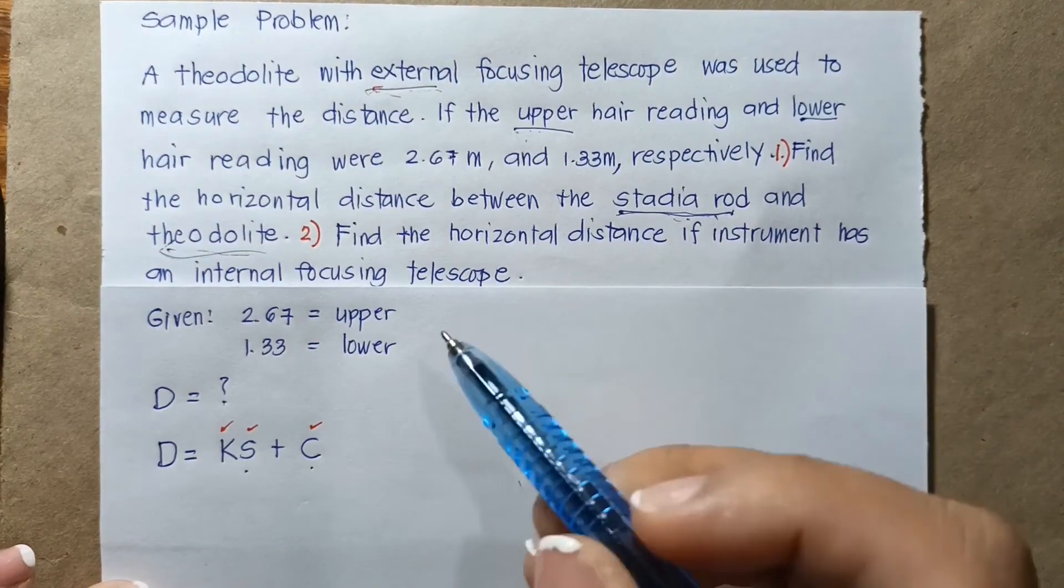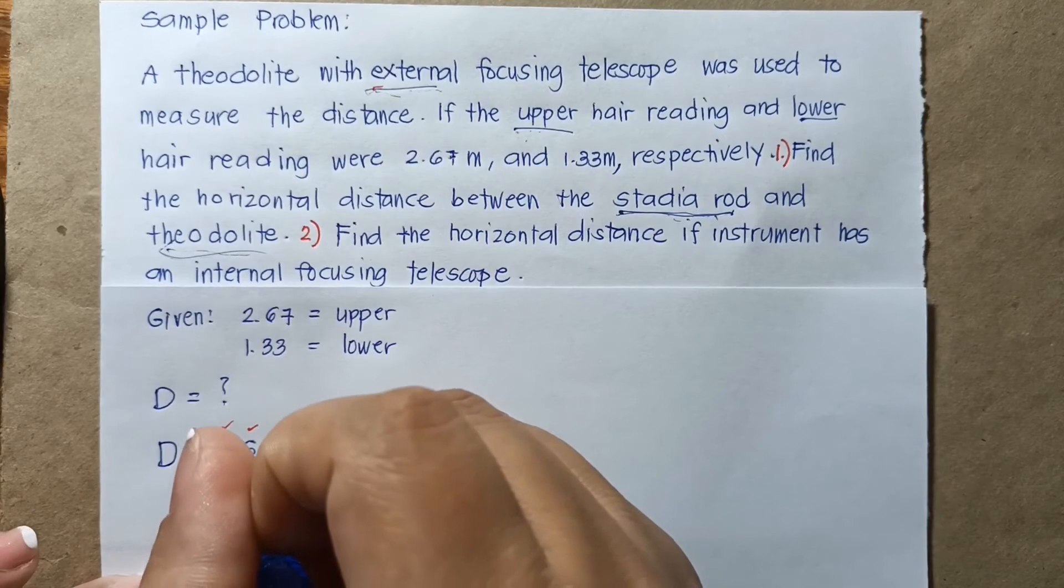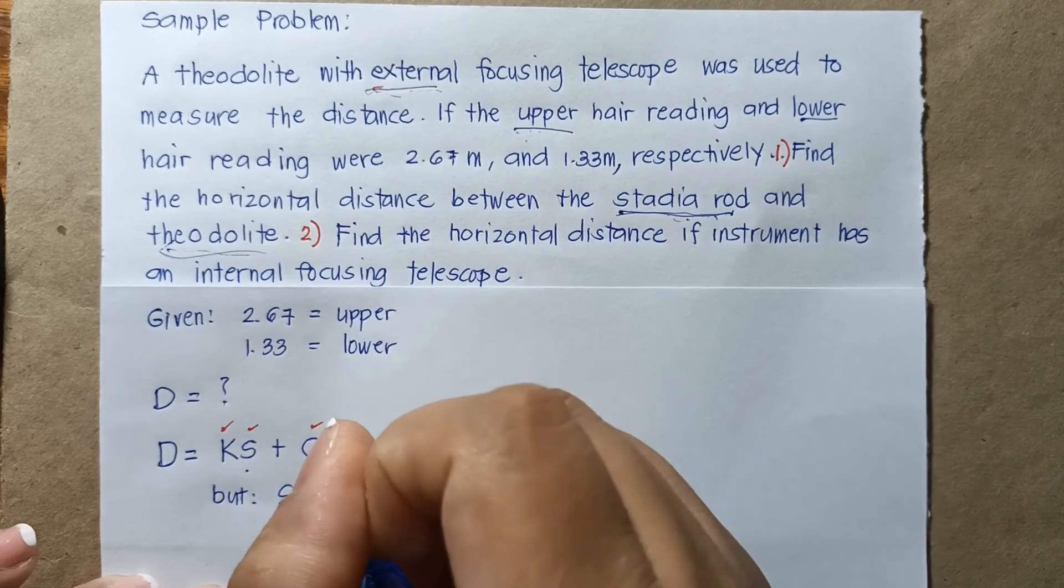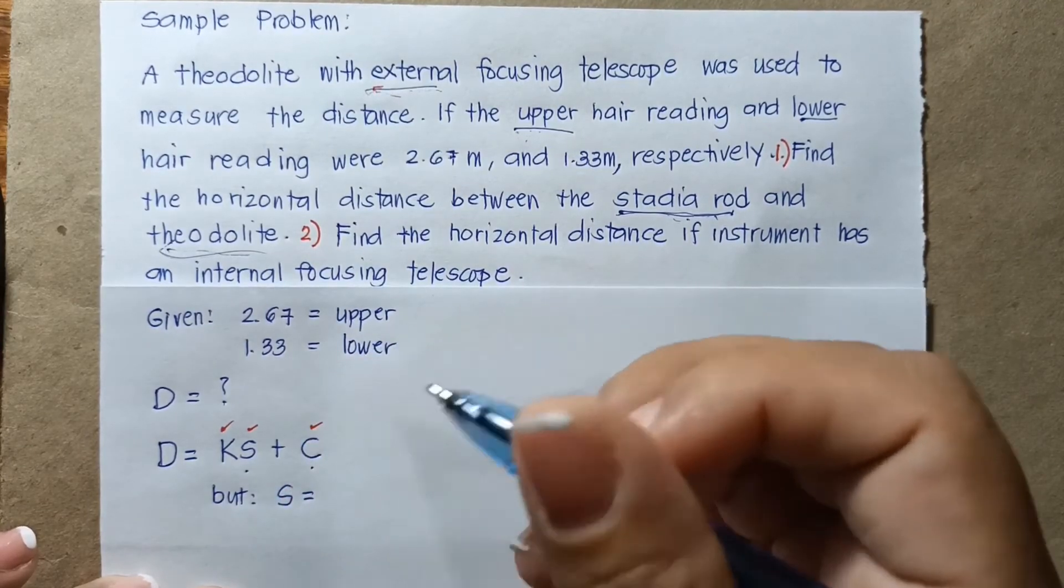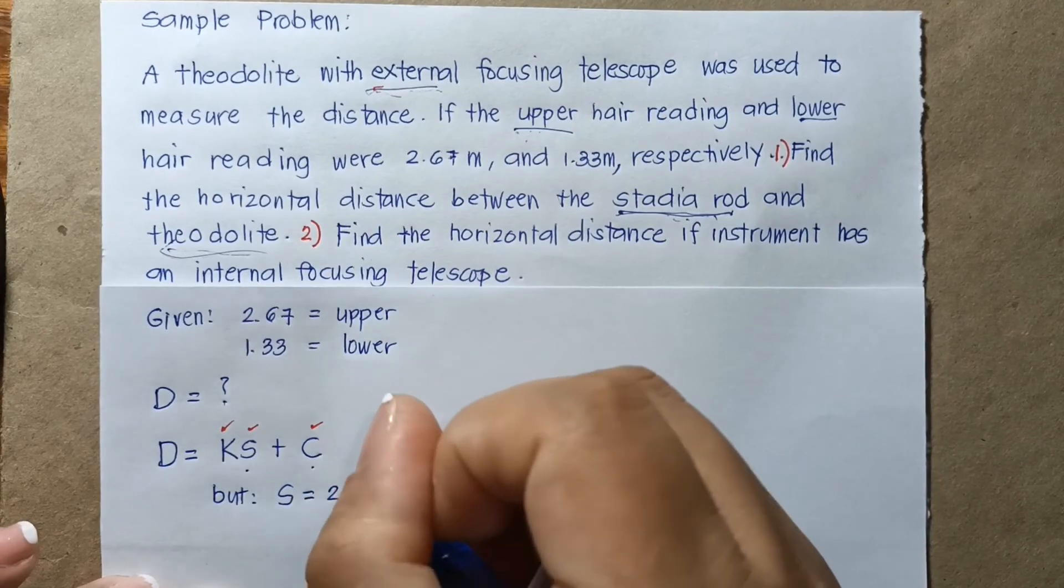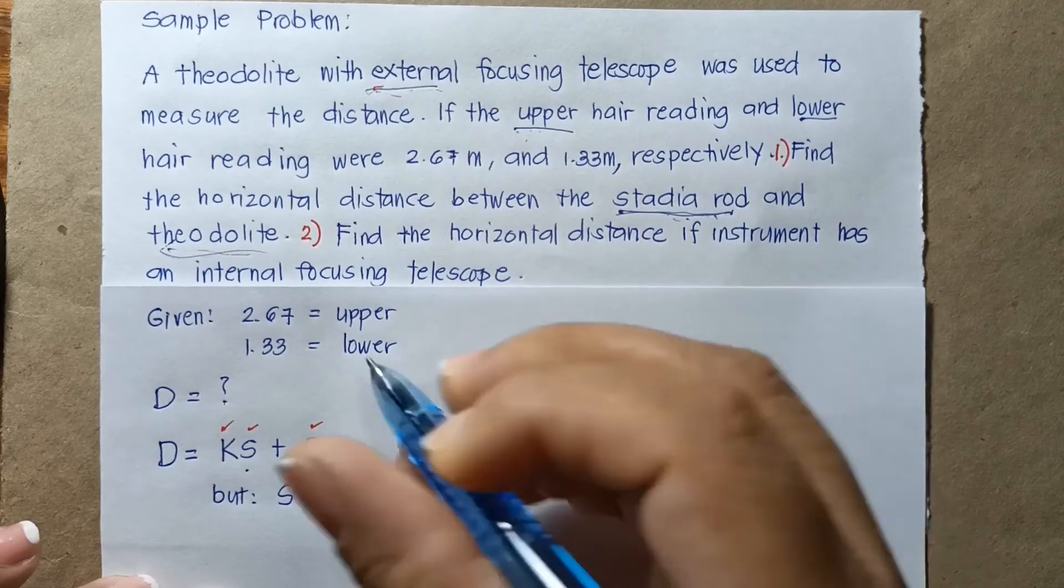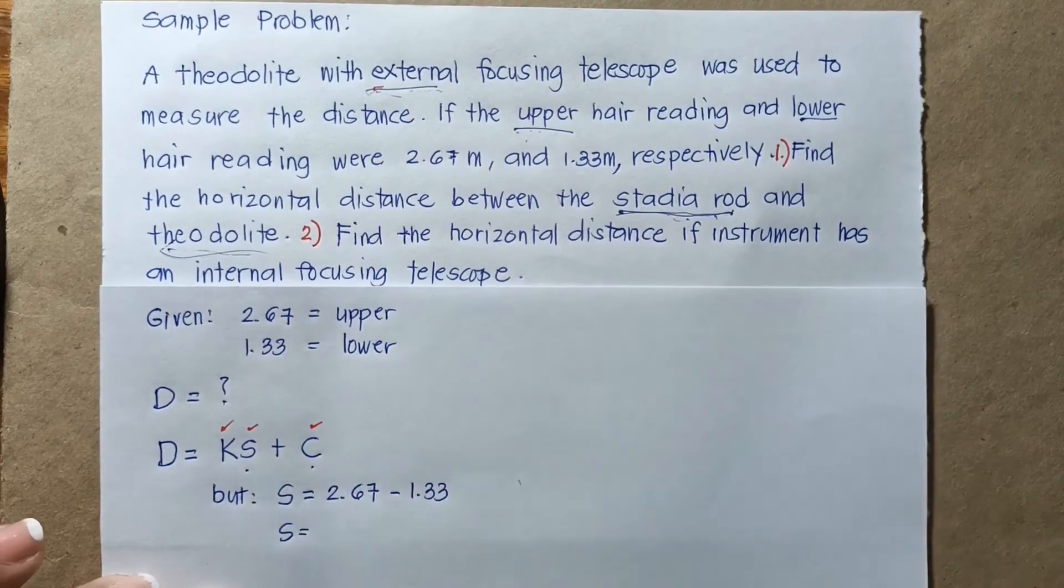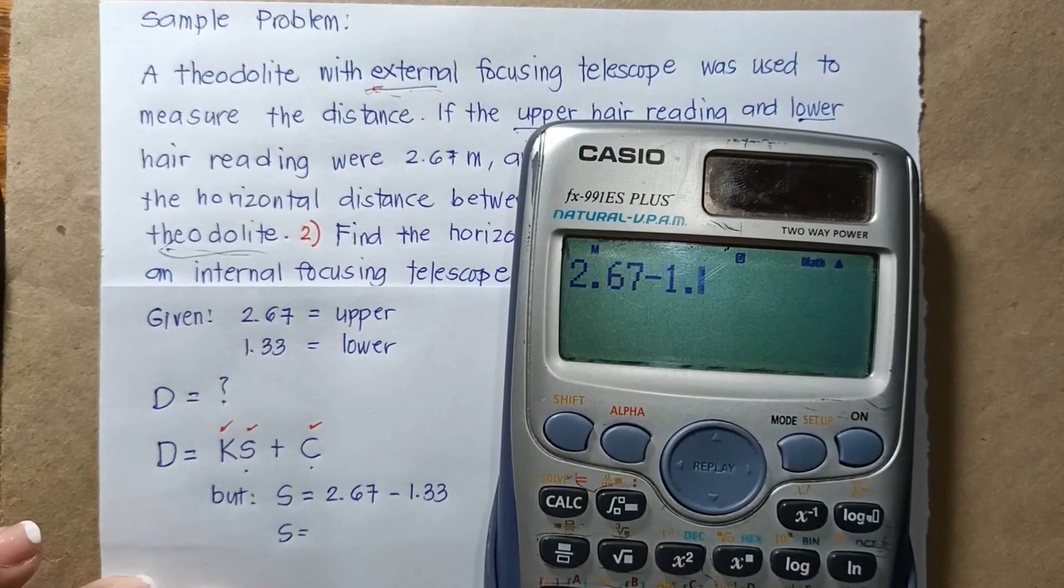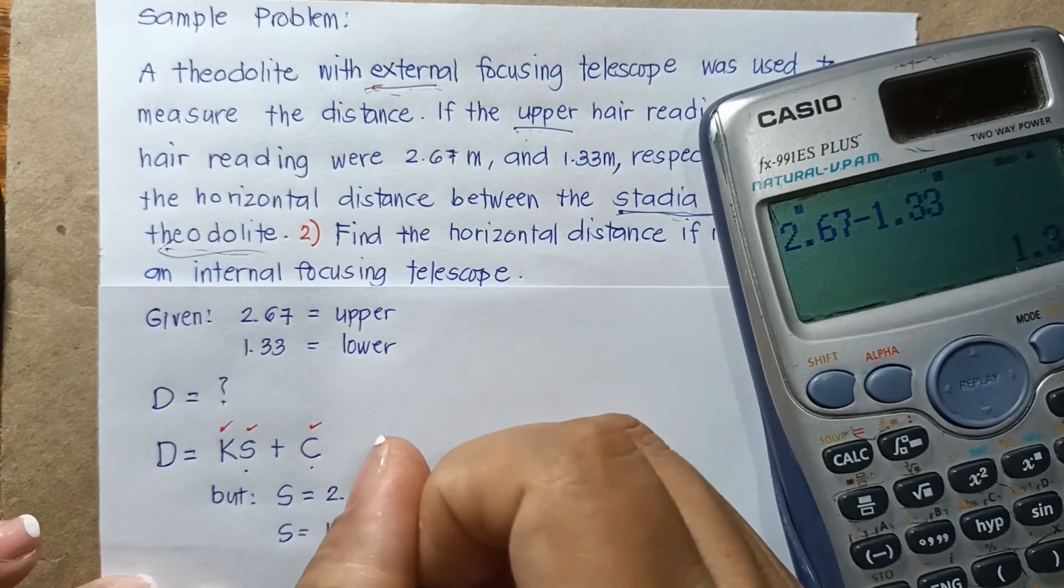Before that, we will solve S. S is equal to the upper hair reading minus the lower hair reading. So it's 2.67 minus 1.33. So S is equal to 2.67 minus 1.33, then it will give you 1.34.